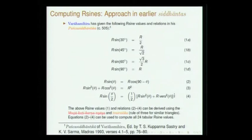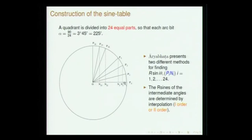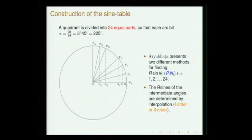Based on these sine values and the set of equations, one can generate the 24 tabular R-sines we discussed while dealing with Aryabhatiya. Usually a quadrant is divided into 24 parts, each taken to be 3 degrees and 45 minutes (225 minutes). The idea is to obtain sine values at these intervals. This is what Aryabhata has given in his table, referred to as Makhyadi — 'makhi, bhaki, phakhi' — that is how it is.